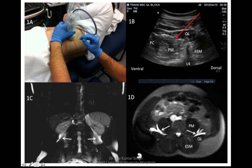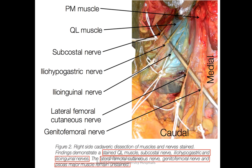The muscle takes origin from the iliac crest and iliolumbar fascia and inserts into the 12th rib and the transverse processes of L1 to L4, so it lies in this plane. People have done dye studies, and in cadavers the dye was injected for the transmuscular Quadratus lumborum block. All they found was that the nerves stained were the 12th nerve, iliohypogastric, and ilioinguinal nerves — the lateral cutaneous nerve and genitofemoral nerve were not stained at all. You can see the blue dye lying under the epimysium of the Quadratus lumborum.